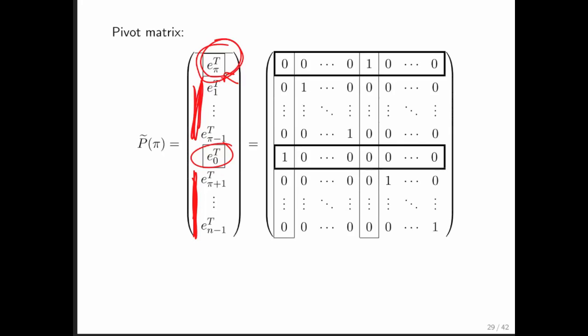So notice that all of these other unit basis vectors are in the correct order. We merely swapped these two unit basis vectors that are the rows of our permutation matrix. And notice the little tilde right there.